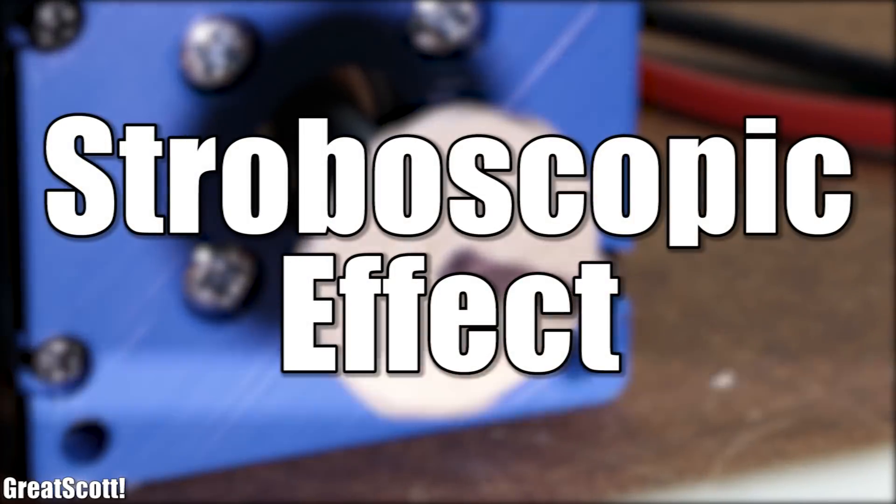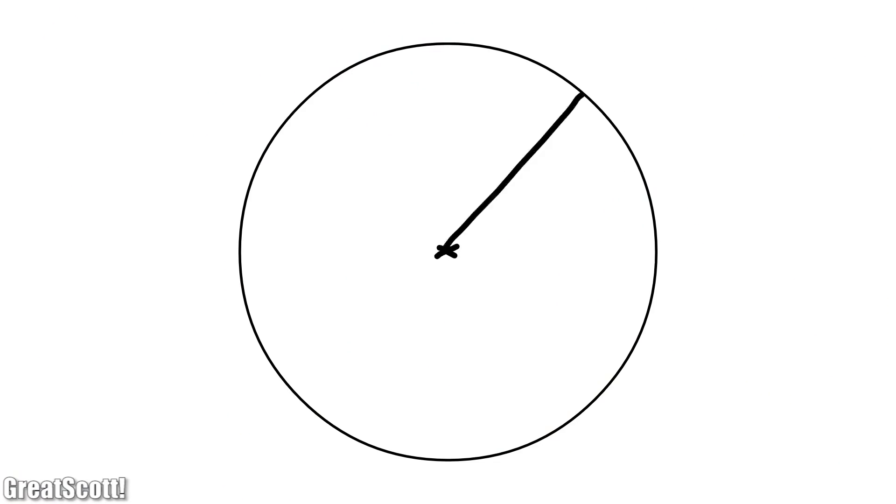This is known as the stroboscopic effect. The reason for that is while before we saw all the positions of the marking during a rotation, now the stroboscope light with its pulse frequency matches the rotation frequency and thus only illuminates the disc when it is starting a new rotation.